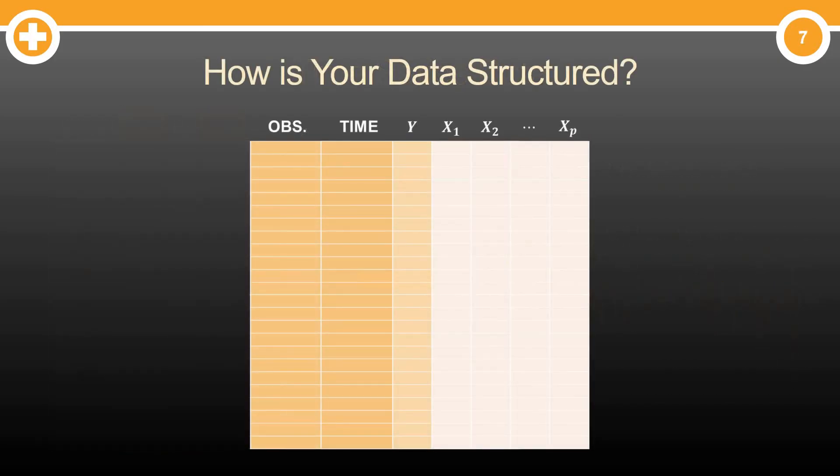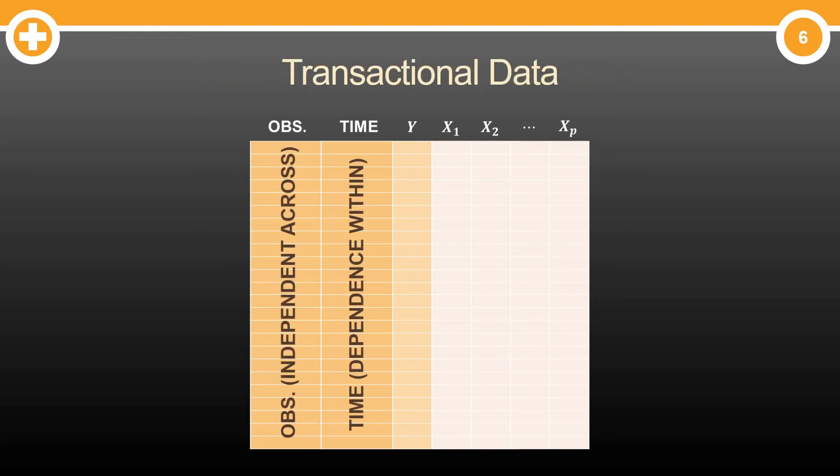But maybe you have something even more. Maybe your data is structured in the way that I like to call the gold standard of data. A transactional data set. Where you have both an index across time and an index across observation. Again, imagine like customer transactions. Each customer is an independent collection of dependent time points. So how do you handle data that looks like this? You have choice. The thing we all crave. You have the ability to do whatever you'd like.